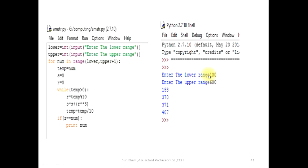The output shows a lower range of 100 and an upper range of 600. Between 100 and 600, the Armstrong numbers are only 153, 370, 371, and 407. We can also find Armstrong numbers in ranges like 100 to 200 or 100 to 300.